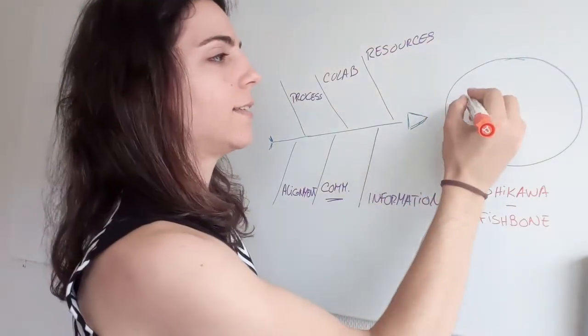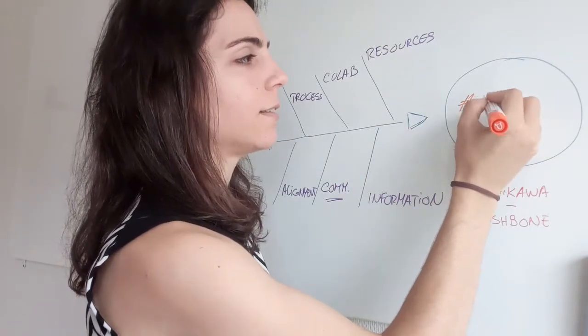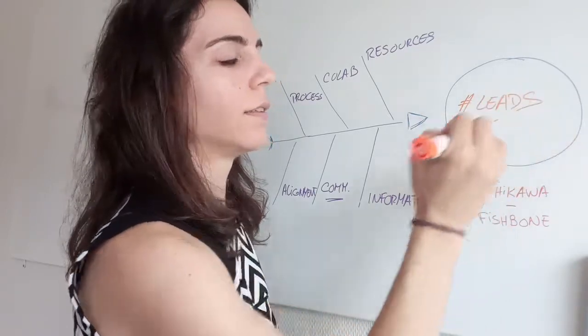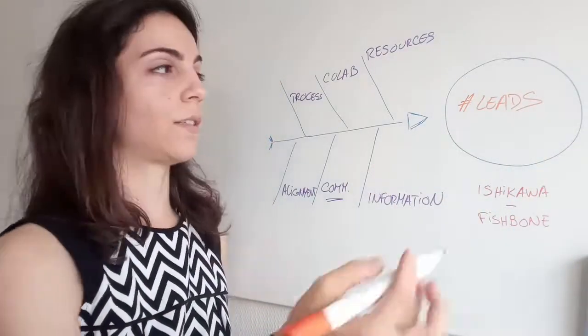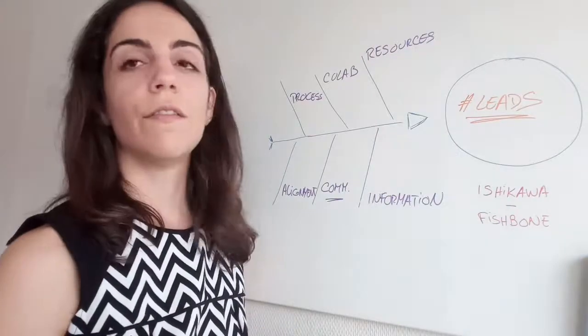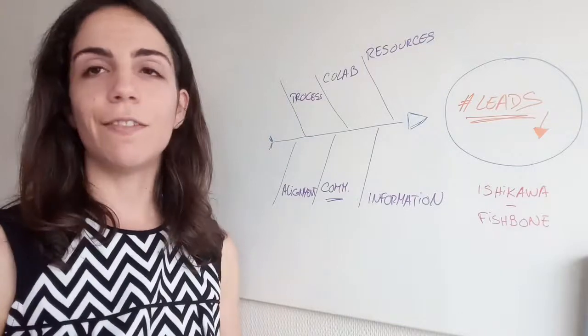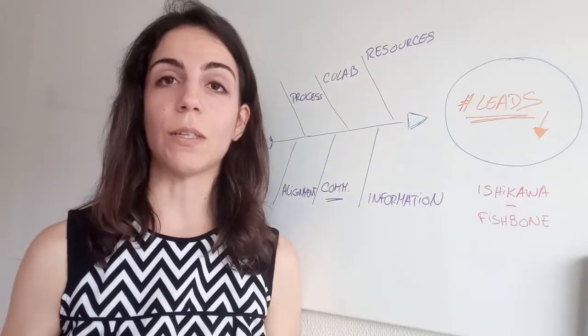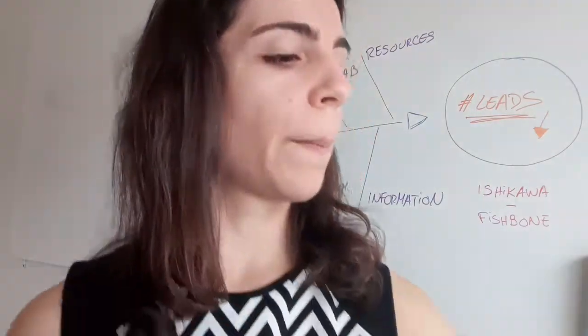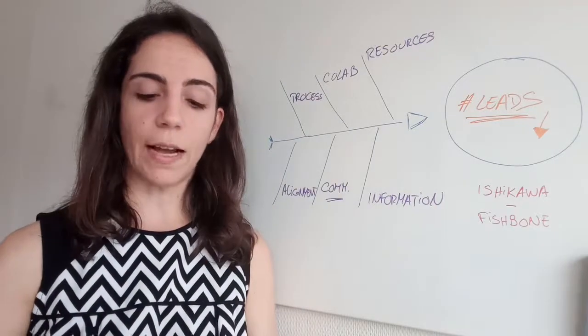So let's say that it's the number of leads that is very low. Let's say it's very low, has an arrow like that. It's very low in comparison to what you want. So what can be some of the causes for that effect?